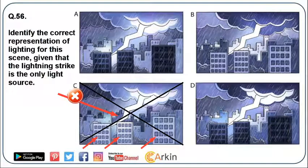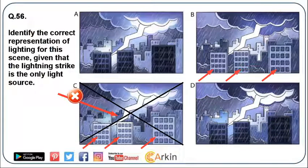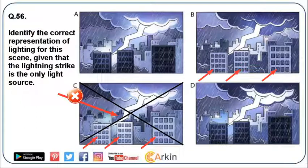Similarly, in option B, the surfaces of the front row of buildings look a little brighter. Since there are no tall buildings in front of these buildings, there will be no light on their surface. So option B is not correct.